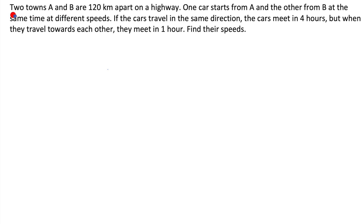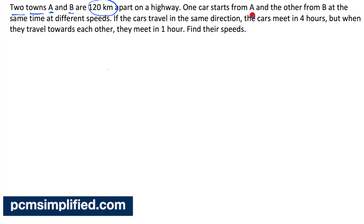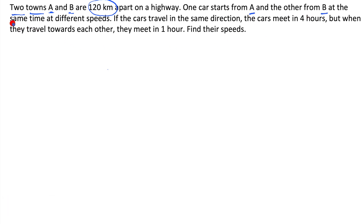The question: towns A and B are 120 kilometers apart on a highway. One car starts from A and the other from B at the same time but at different speeds. If the cars travel in the same direction, they meet in four hours. When they travel towards each other, they meet in one hour. Find their speeds.